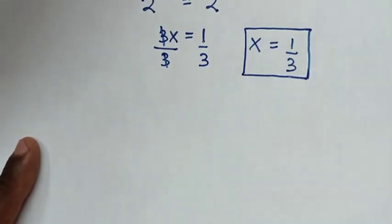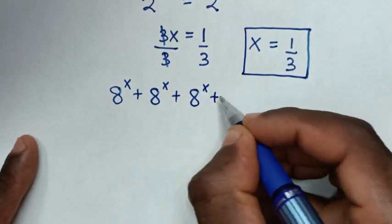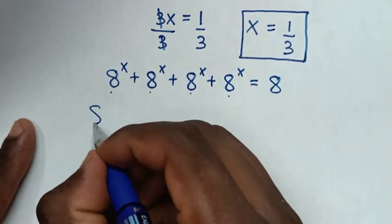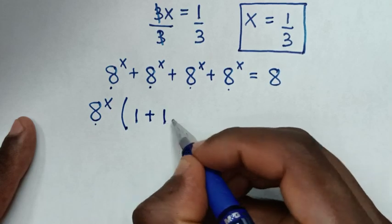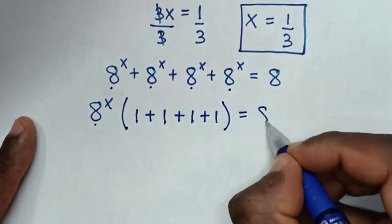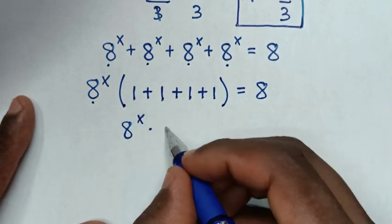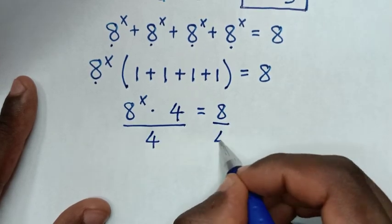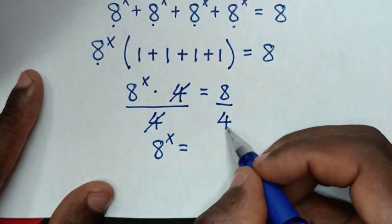To solve using another method, from our problem 8 power x plus 8 power x plus 8 power x plus 8 power x equals 8, we take 8 power x as common out of the bracket. Each term divided by 8 power x is 1, giving us 8 power x times 4 equals 8. Dividing both sides by 4, 8 power x equals 2.